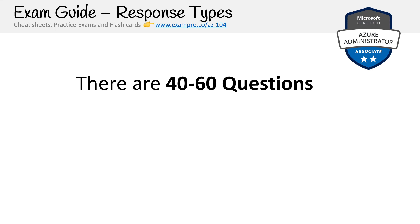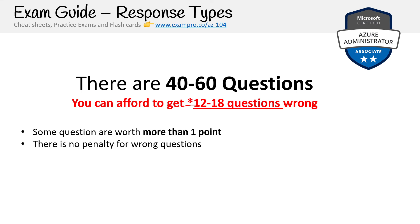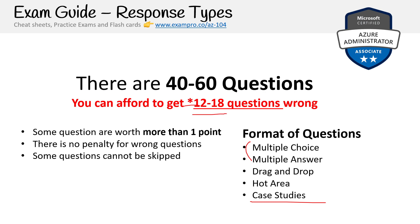In terms of response types, there are 40 to 60 questions, meaning you can afford to get about 12 to 18 questions wrong. Azure is a bit odd — they don't have consistency across their questions and have a bunch of different question types. Some questions are worth more than one point; there is no penalty for wrong answers, so never leave a question blank. There are also cases where you cannot skip questions. Question types include multiple choice, multiple answer, drag and drop, hot areas — basically concept matching — and case studies, where they give you a business scenario with a large breakdown and ask a series of related questions.